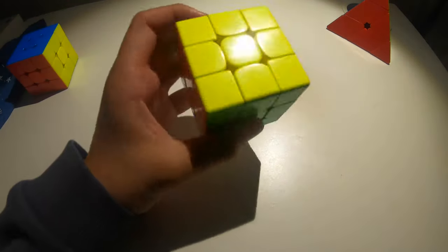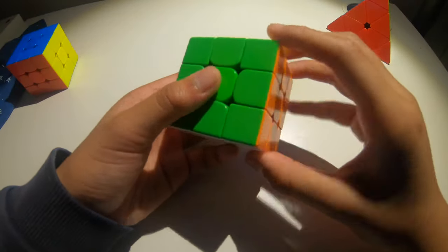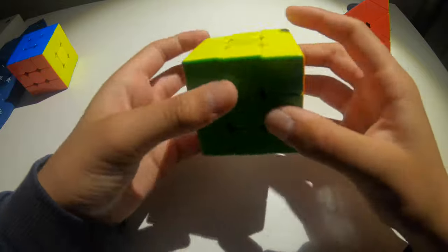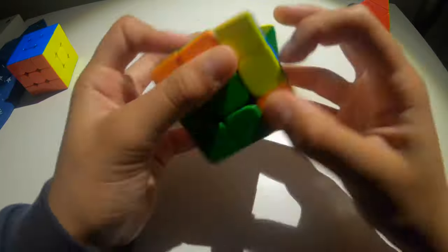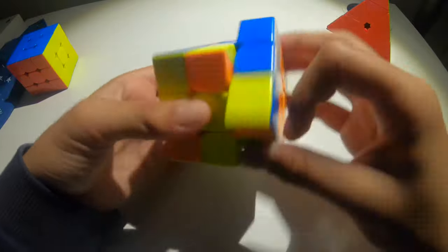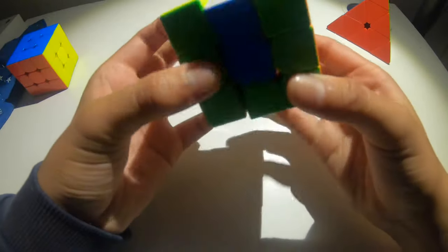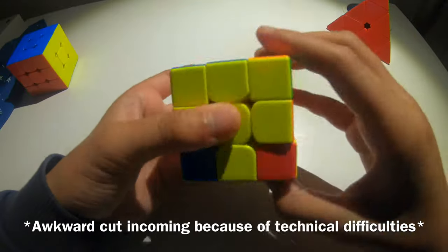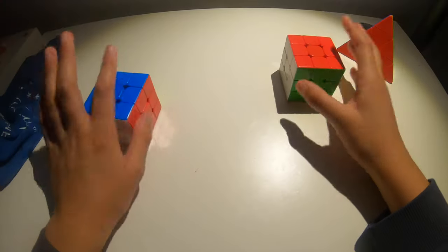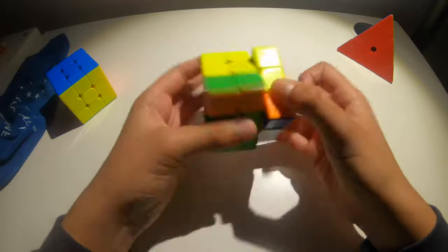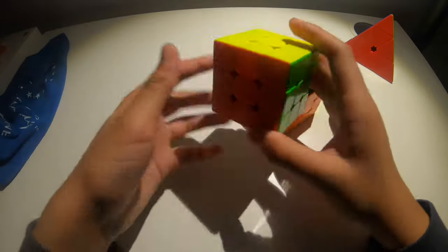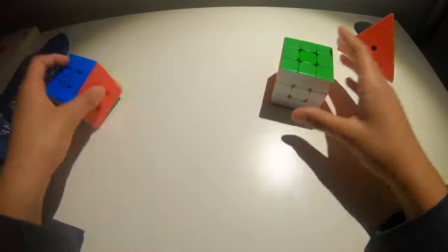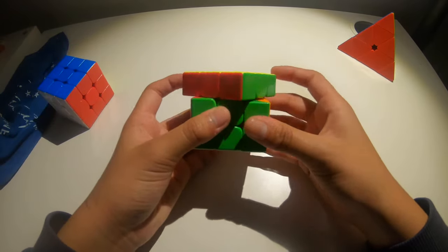Okay, let's try this one, the Yulong core with RS3M 2020 pieces. Alright, so I'm easily going to say that I like this one a lot better. Just because the corner cutting is a lot better, I definitely could loosen this, but I don't have time now. So, for now, this is just a lot better.